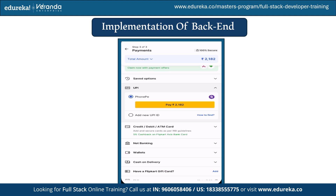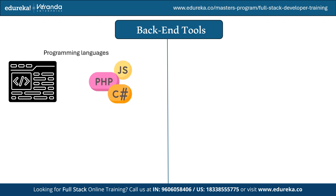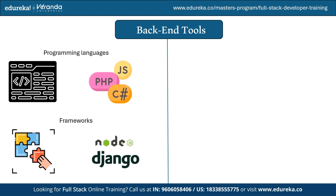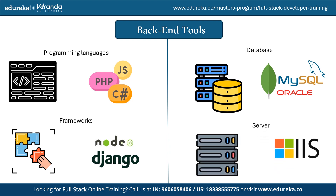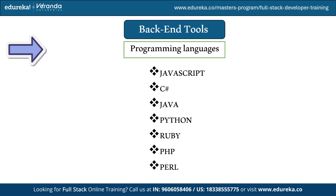The backend developer ensures the website, database, and servers are working correctly, and uses code to help the browser communicate with the database and server. The tools of backend development include programming languages, frameworks, databases, and servers. Programming languages are the most critical part of backend development, responsible for server-side processing, database interaction, and API development. Languages used include JavaScript, C#, Java, Python, Ruby, PHP, and Perl — though JavaScript is the most widely used for both frontend and backend.